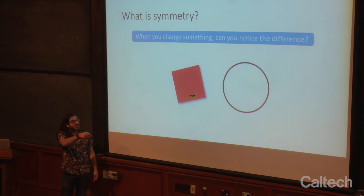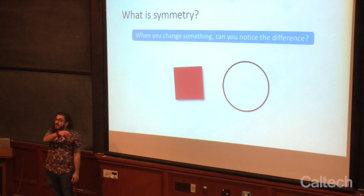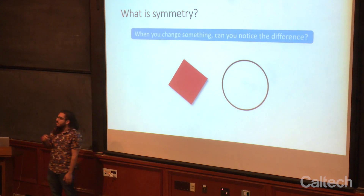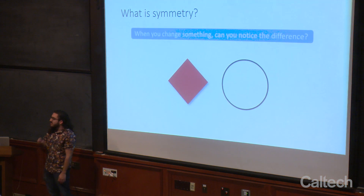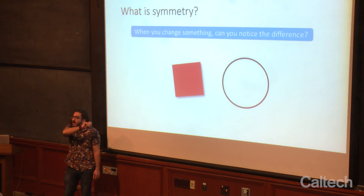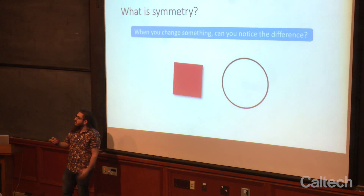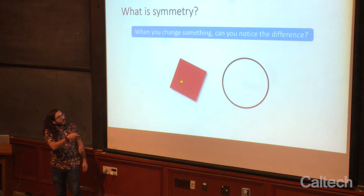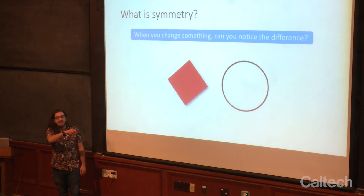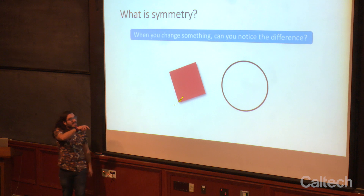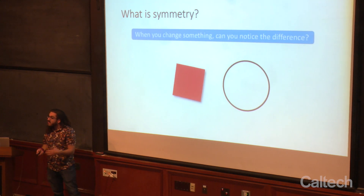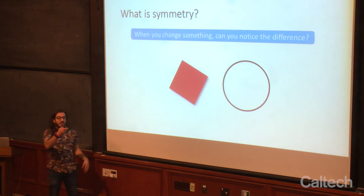Every symmetry involves applying some operation and then seeing if you can tell that you've done that. Here I have two GIFs — both are animated and rotating. But as you can see, the circle — it's really hard, if not impossible, to tell that it's rotating. We say that the circle is rotation symmetric; no matter how much you turn it, it looks the same. But the square only looks the same every time it rotates 90 degrees, so it has less symmetry than the circle.